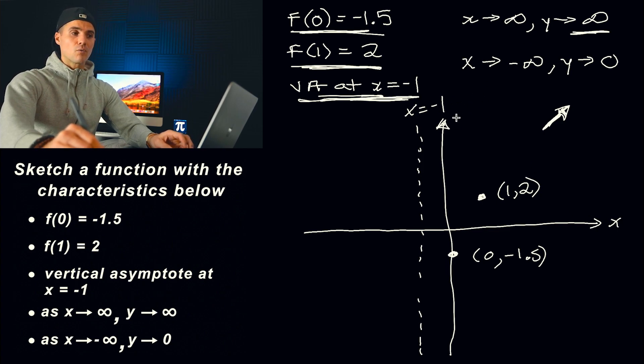As x goes to positive infinity, the y values are also going towards positive infinity. So we got that handled there. And then over here, as x approaches negative infinity, y approaches zero.